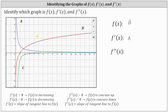Notice that function b is always concave down, which means the second derivative, or f double prime of x, will always be negative, which is why the second derivative is function c. Another way to verify the second derivative would be to sketch a tangent line to the graph of f prime of x, which we know is function a. Let's do that at x equals one. Notice the slope of the tangent line to f prime of x at x equals one is negative one, which is the function value given by the second derivative at x equals one.